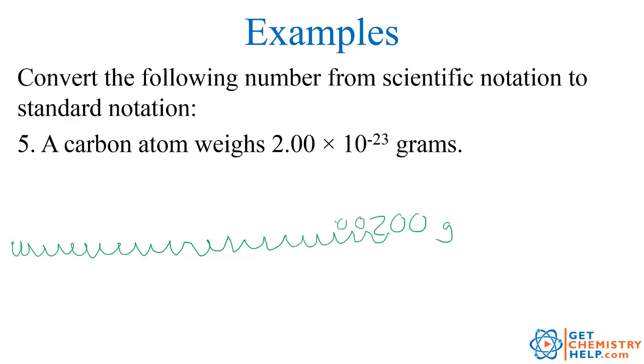We see quickly why scientific notation is much preferred to standard or decimal notation because it saves me having to write all of these zeros. And it avoids all the confusion. So 0.00 is the same as 2.00 times 10 to the negative 23rd.